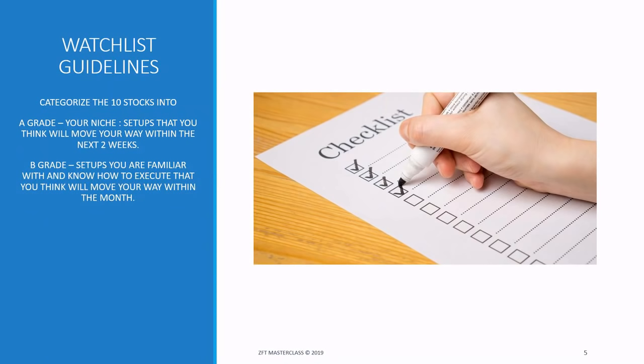The difference with A grade is that when you're really skilled in a niche, you can feel or estimate when a stock will break out within a week. The two-week window is set for beginners still building experience and intuition — sometimes it may take up to two weeks. Don't worry if it takes three — what's important is seeing the move before it happens. B grade moves within the month.